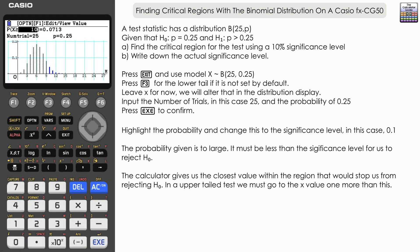So 10 or anything greater than 10 will mean that we'd have to reject the null hypothesis in favor of H₁. So just to complete the question there: find the critical region where x ≥ 10, and to give the actual significance level, it's 0.0713, or you could give that as 7.13% as a percentage.